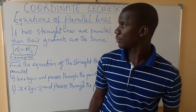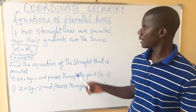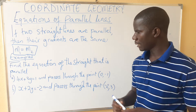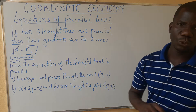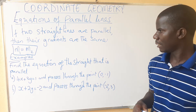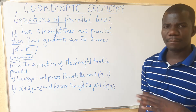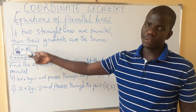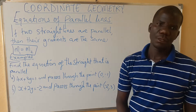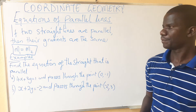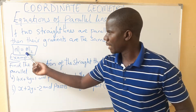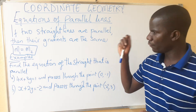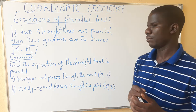Welcome to another lesson in Coordinate Geometry where we are considering the equations of lines that are parallel. When two lines are parallel to each other, their gradients are the same. Two lines that are parallel to each other have the same gradient. If this is the gradient for the first line and this is the gradient for the second equation, then we are equating the gradients because they are equal. Gradients of two lines that are parallel are equal — take note of that.